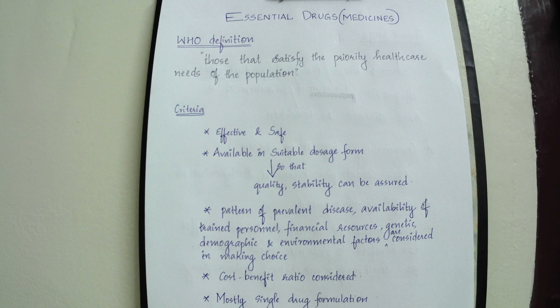All these factors are considered while making the choice of essential drugs. Then the cost-benefit ratio is considered: if there are two drugs, the drug with a good benefit and less cost compared to the other is selected into the essential drug list. Mainly, single drug formulations are selected as essential drugs, even though there are some exceptions.